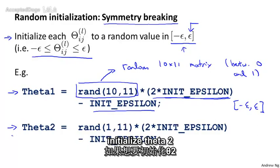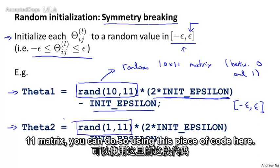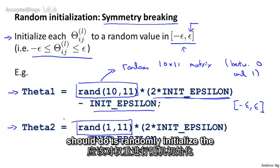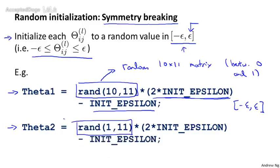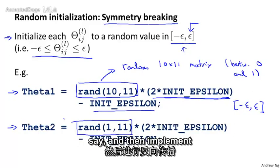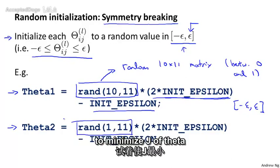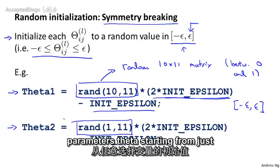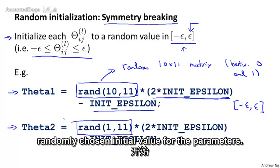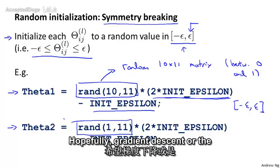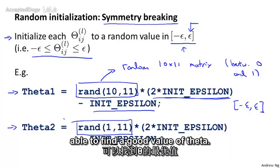Similarly, if you want to initialize theta 2 to a random 1 by 11 matrix, you can do so using this piece of code. To summarize, to train a neural network: randomly initialize the weights to small values close to 0, between minus epsilon and plus epsilon. Then implement back propagation, do gradient checking, and use either gradient descent or one of the advanced optimization algorithms to minimize J of theta as a function of the parameters theta, starting from this randomly chosen initial value. By doing symmetry breaking, hopefully gradient descent or the advanced optimization algorithms will be able to find a good value of theta.